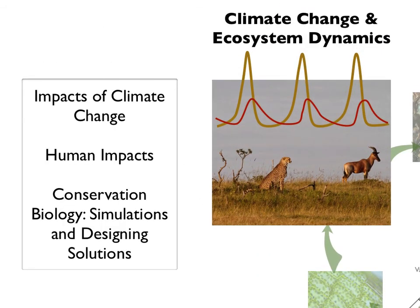While students examined simple ecosystem interactions at the beginning of the course, now they're ready to loop back around and look at things from a more sophisticated perspective: how do ecosystems respond to changes? Students apply their models of ecosystem interactions to predict how different ecosystems will respond to changes in Earth's climate. They think about these changes from the perspective of a conservation biologist who designs solutions that minimize human impacts on ecosystems, and use simulations to predict the outcomes with and without those solutions.